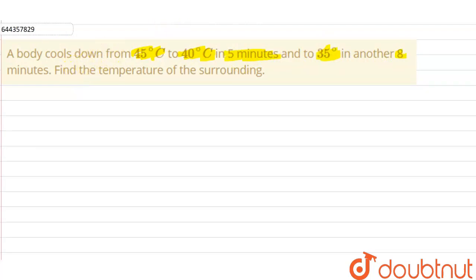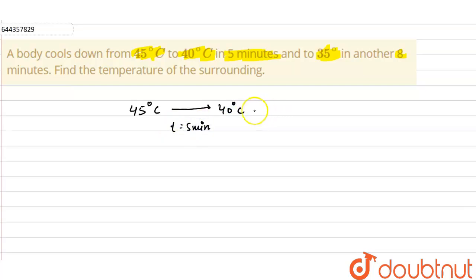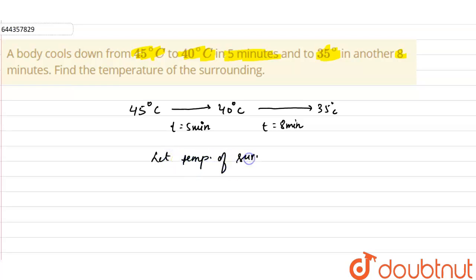We have to find the temperature of the surrounding. In the given question, a body is cooling down from 45°C to 40°C in 5 minutes, and to 35°C in another 8 minutes. Let us suppose that the temperature of the surrounding is T.